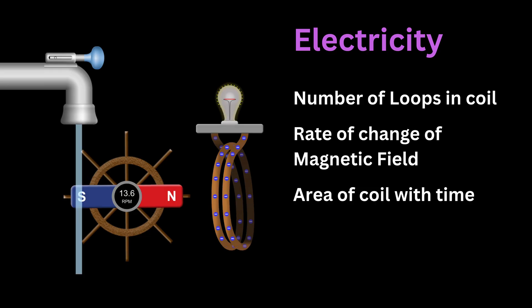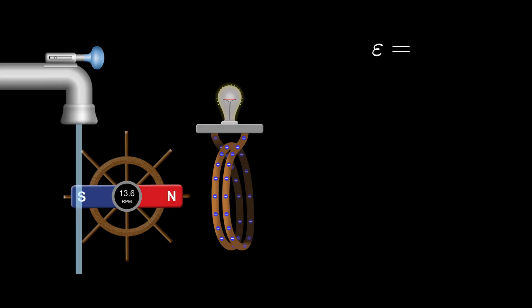And he captured it in one powerful formula. He said, the electric voltage generated, which we'll call E, is equal to minus n times d phi b over dt.